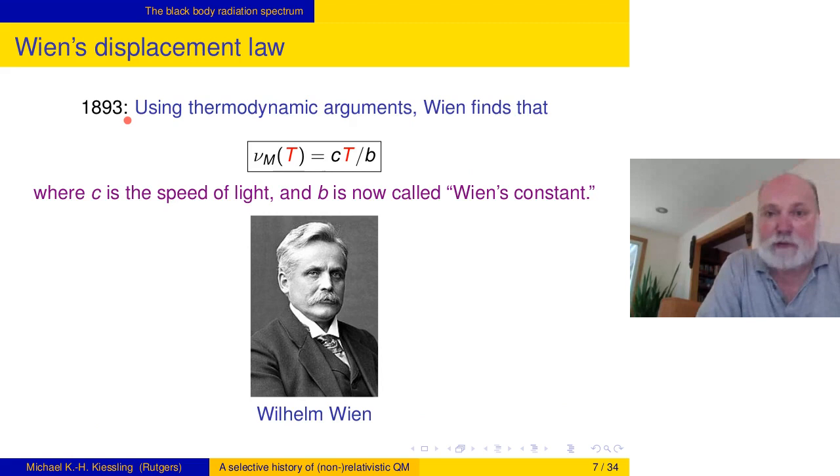Enter 1893. Wilhelm Wien finds a relationship between the point in the frequency axis where the maximum occurs and the temperature, and he finds that this is just a linear relationship. He introduced a single constant B, but he wrote it in terms of wavelengths. I'm taking a little bit advantage that we know heat radiation is electromagnetic radiation that propagates with the speed of light. So I wrote it for the frequency, and then the speed of light enters here.